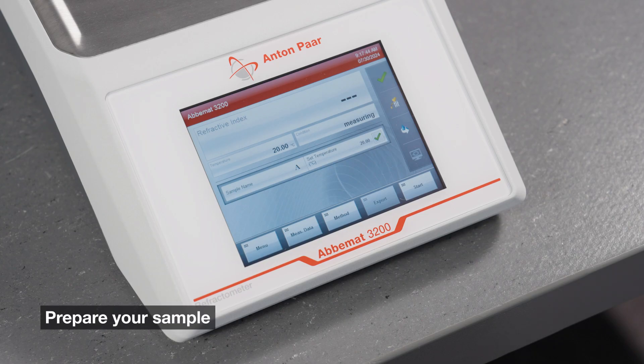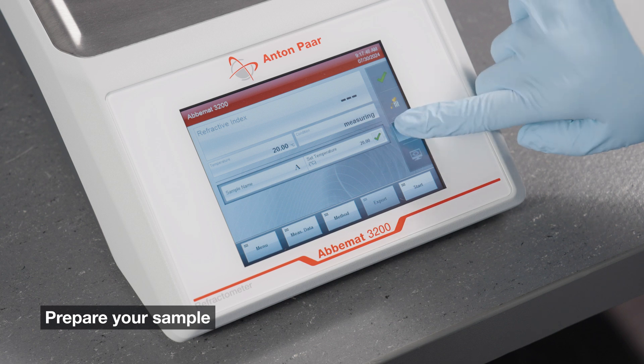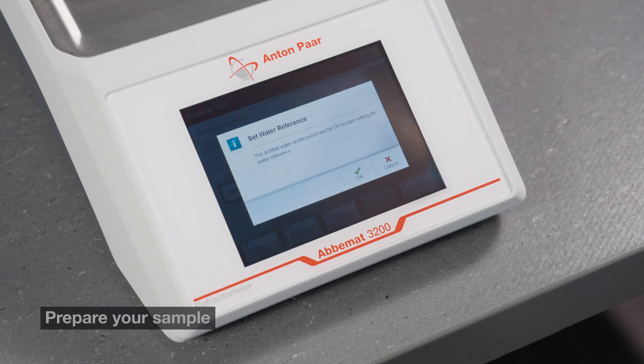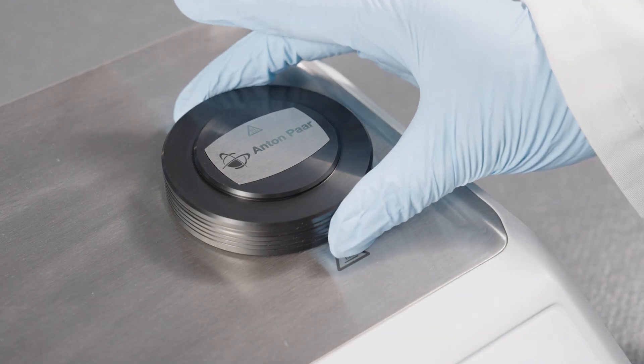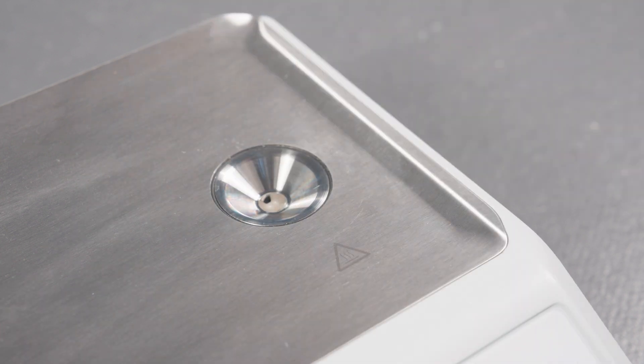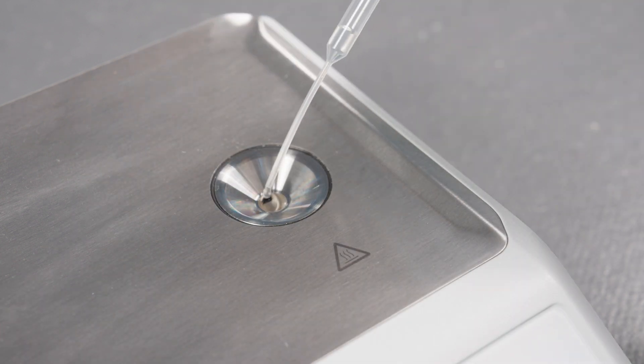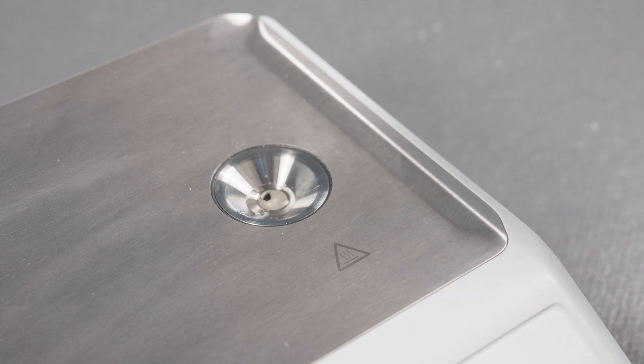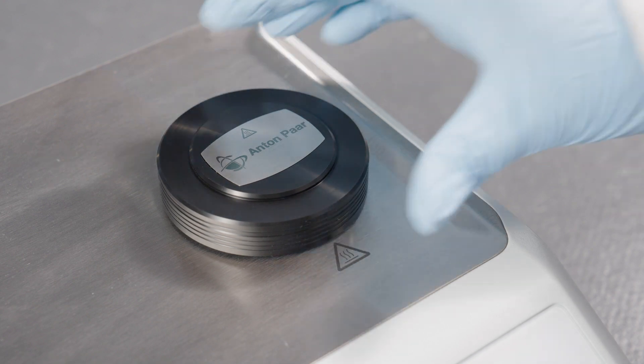Adjust using UltraPure water for accurate results. Tap the adjustment icon, follow on-screen instructions, and ensure the sample is homogeneous and free of bubbles. Use a pipette to apply at least one milliliter of UltraPure water to cover the prism completely. Place the magnetic sample cover over the sample.